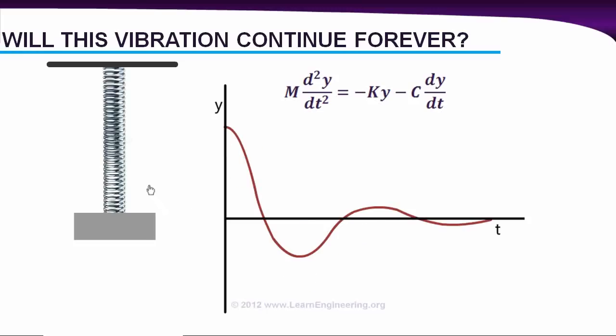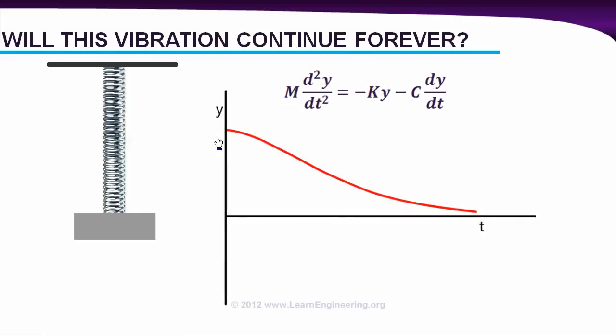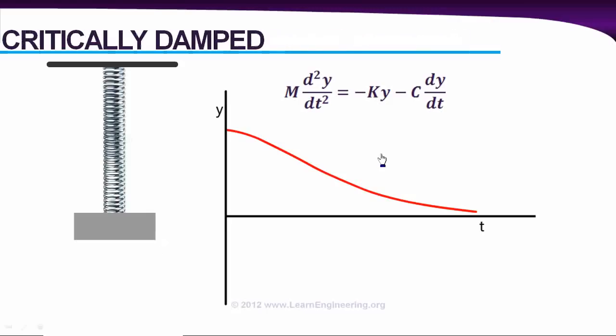So now we'll increase viscosity again, and we'll find a point where there is no oscillation at all. It will be like this: the mass will slowly go to the equilibrium point without any oscillation. The mass will start from here and slowly settle down to the equilibrium position. You can find the viscosity of the fluid required for this critical damping with some mathematical analysis. It will be like this, as a function of spring constant and mass of the system.